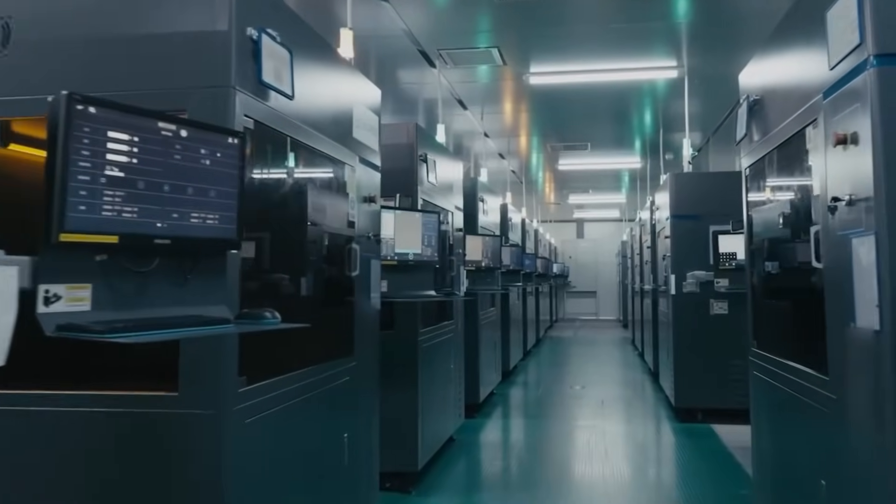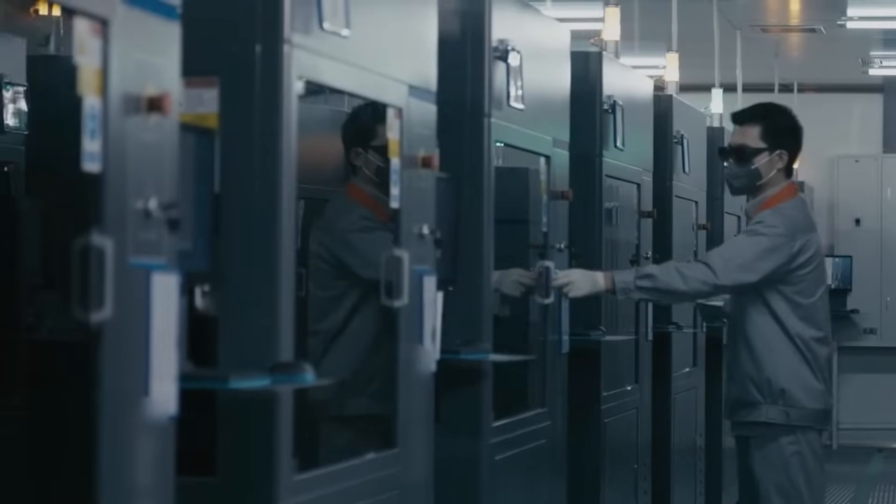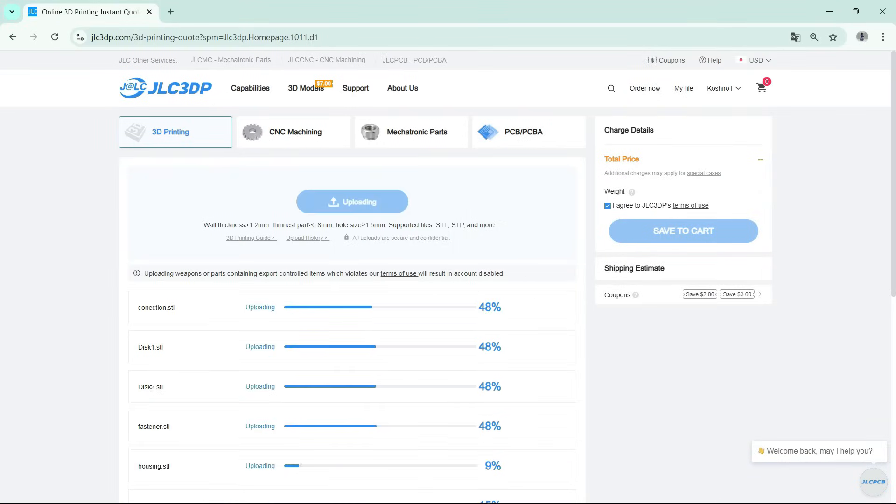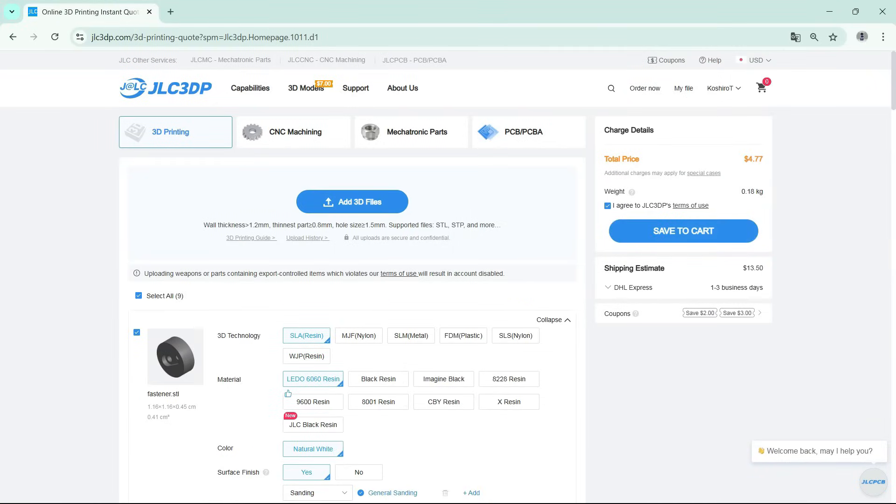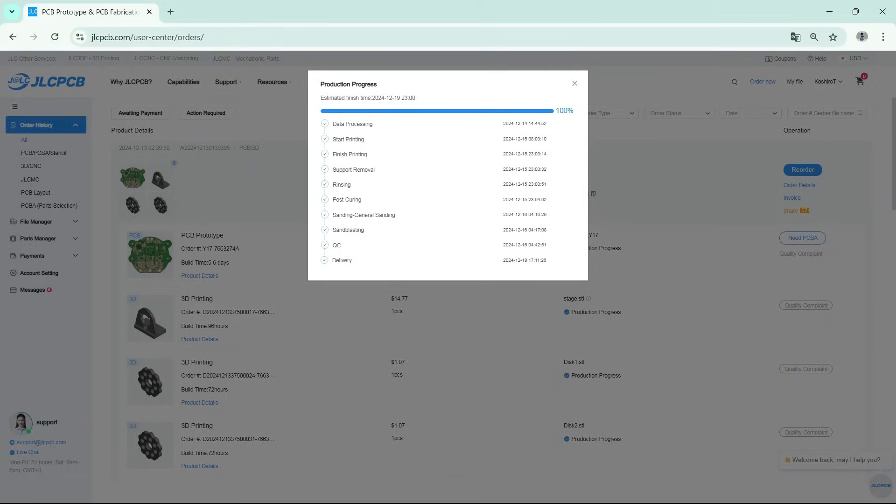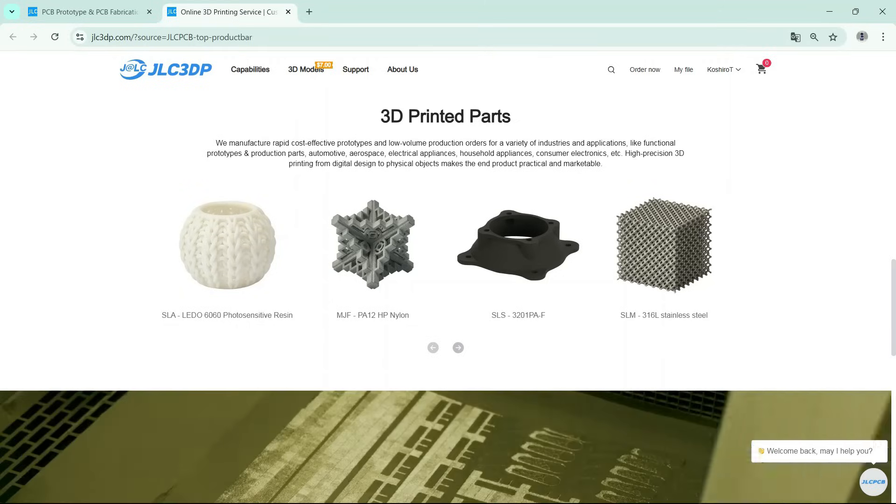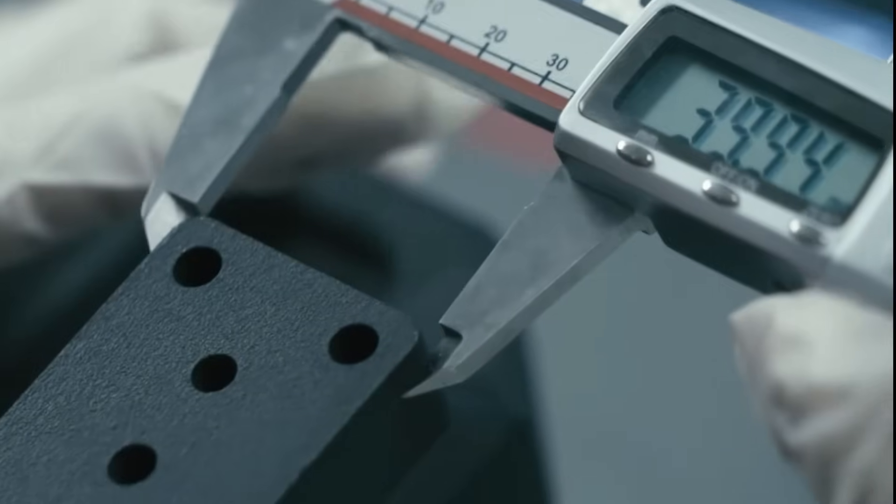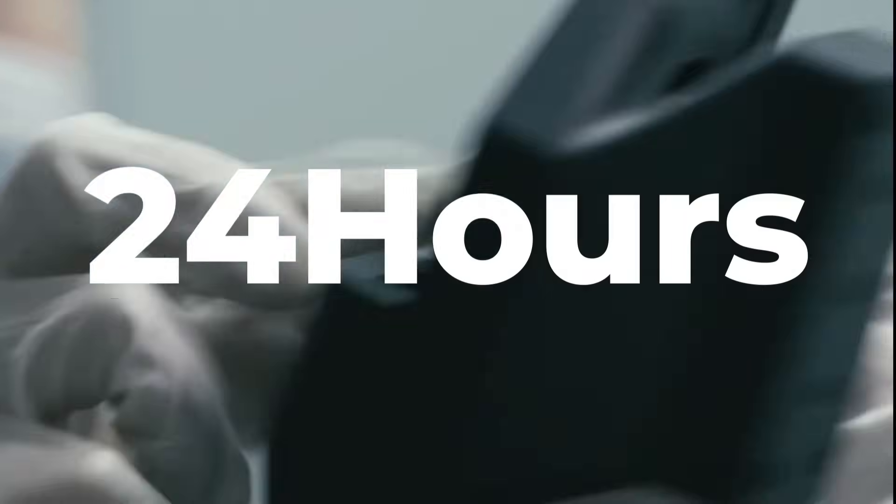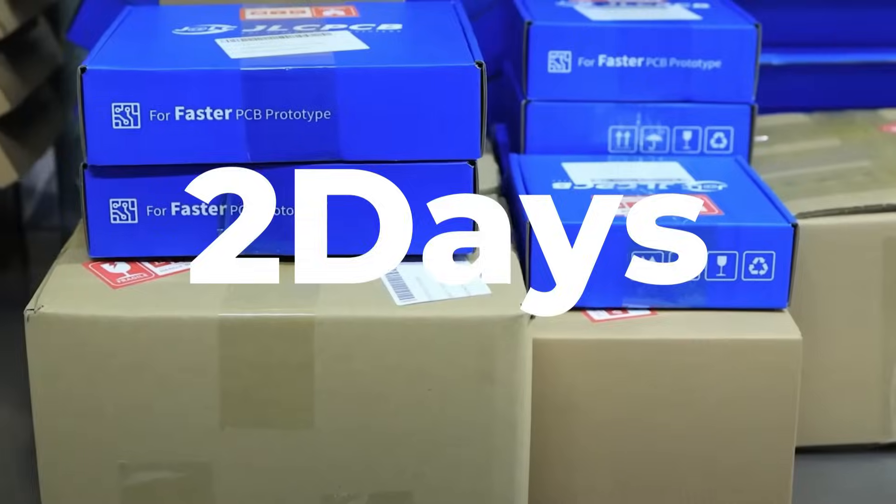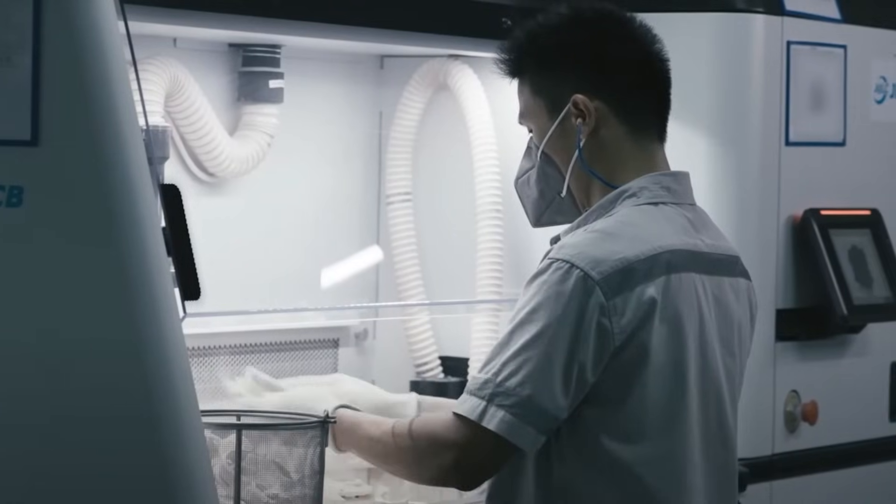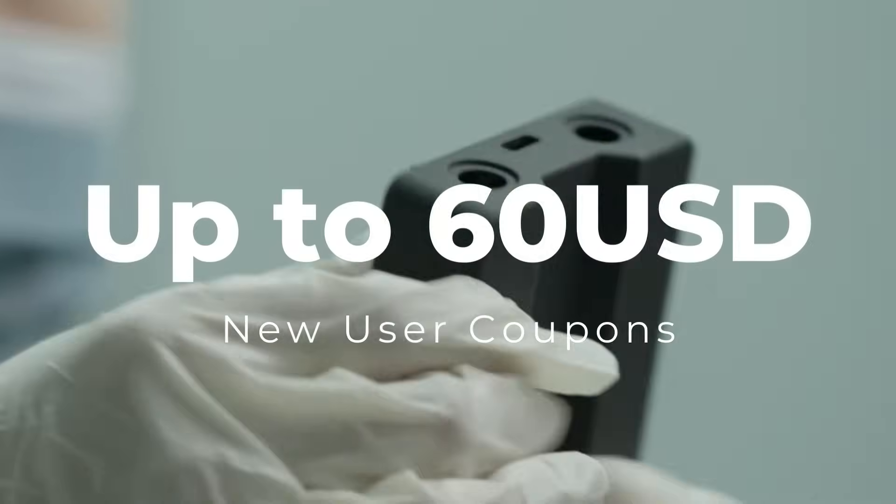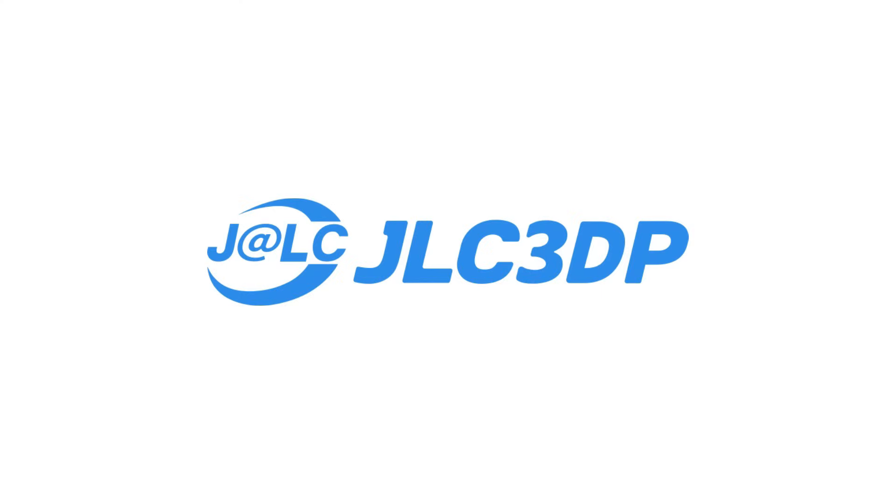JLC3DP—the future of manufacturing with advanced 3D printing services. Their streamlined online platform allows for easy upload of 3D models, instant quotes, and real-time order tracking. From material selection to the speedy delivery of final products, they meticulously manage every step, with production times as fast as 24 hours and delivery within just two days. By watching this video and becoming a new JLC3DP user, you can receive coupons worth up to $60.